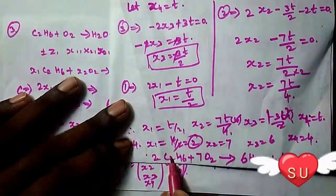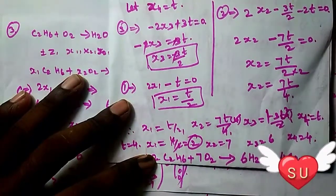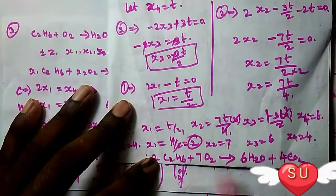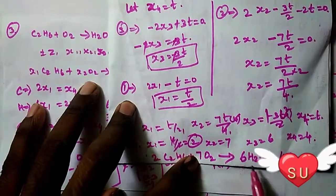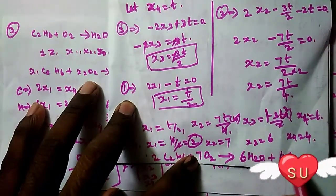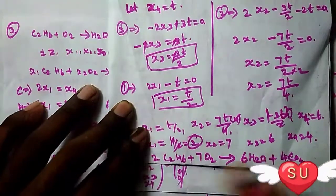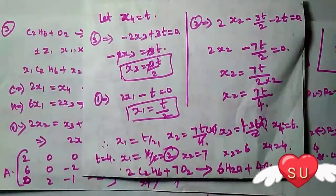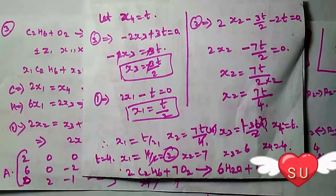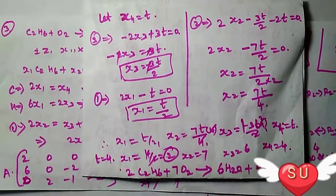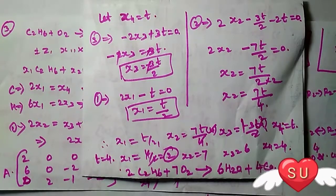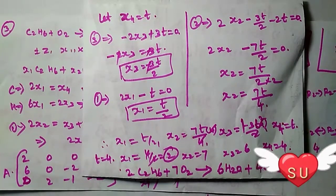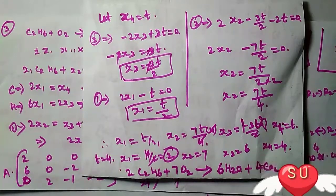Let's verify: 2 times 2 carbons equals 4 carbons on both sides. 2 times 6 hydrogens equals 12, which equals 6 times 2 from water. 7 times 2 oxygens equals 14, which equals 6 plus 8 from products. The equation is balanced. Please subscribe to the channel, like, and click the bell icon. Thank you friends.